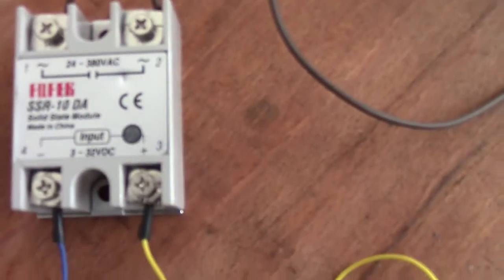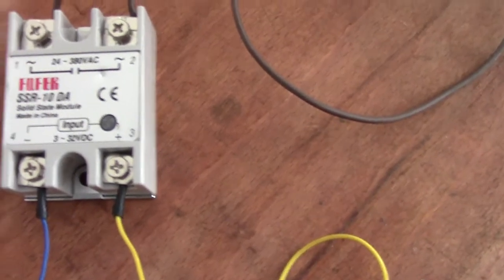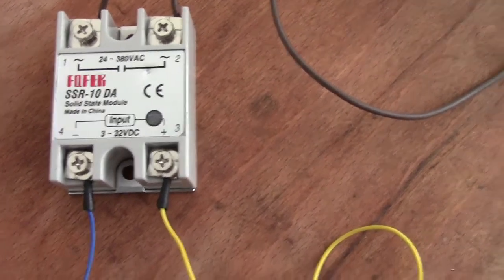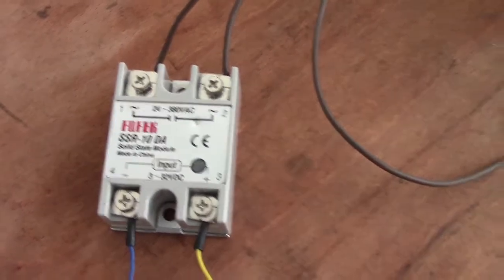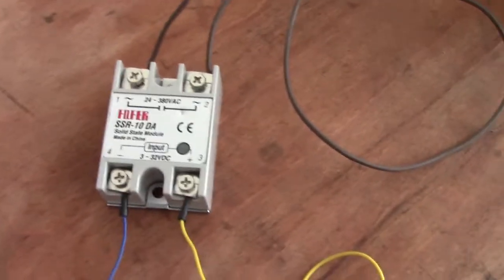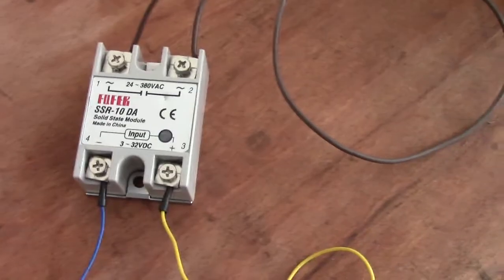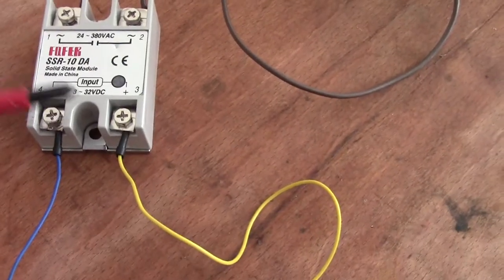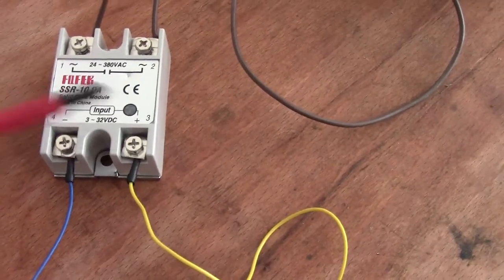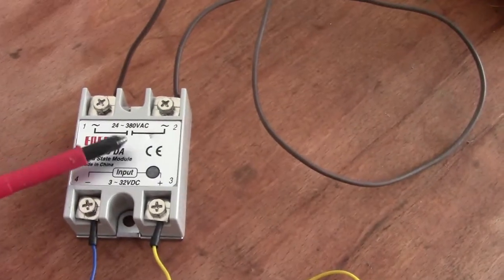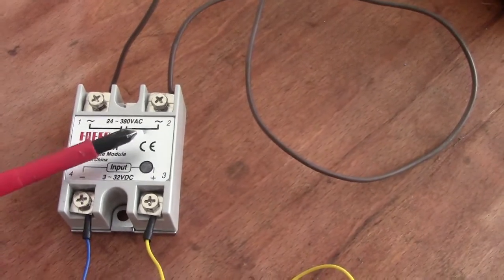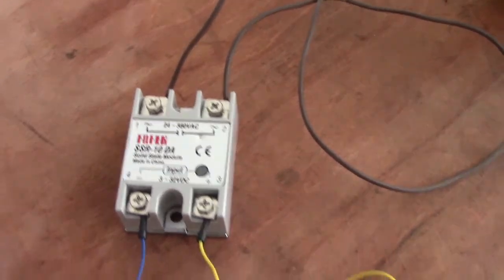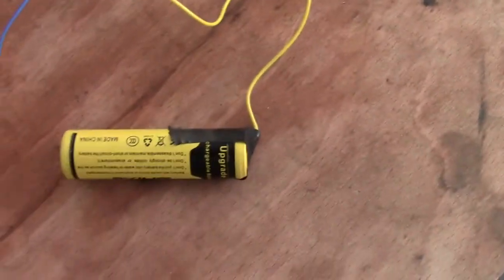So what came through the post today is a FOTEC SSR 10 amp solid-state relay. It's just like a normal relay but instead of using coils it uses chips, solid-state. Basically you can use these with a 3 to 32 volt control side and a 24 to 380 volt AC load side.